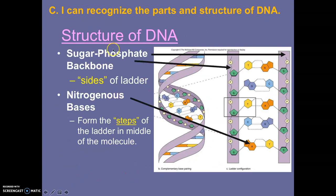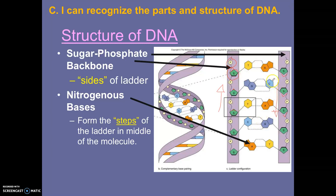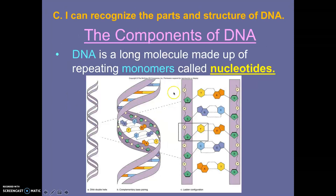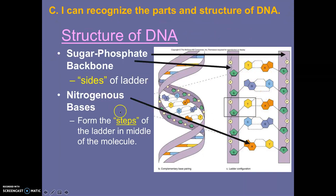The sides of the ladder — your backbone — are going to be made of sugar and phosphate. You have phosphate and a sugar all connected to one another, and that makes the sides or the backbone of DNA. Notice how the sugars on one side are pointing in one direction, and on the other side they're pointing in the opposite direction. We say that the two sides of the DNA ladder run in opposite directions. The steps of the ladder, in the middle, are going to be made of nitrogenous bases.